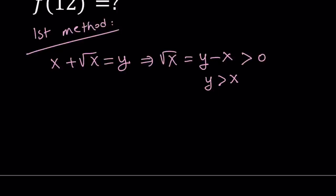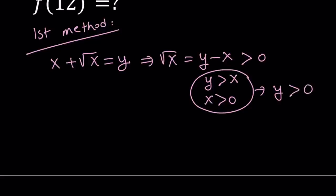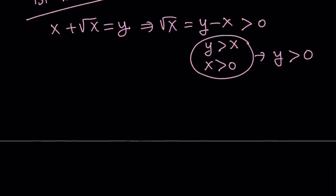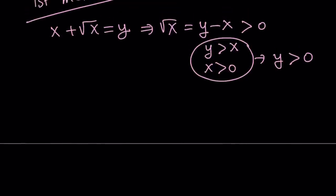Since y is greater than x, and x needs to be positive in order for this to be defined, that also implies this system means y is greater than 0 as well. So we have the following system. Under those conditions, let's go ahead and solve this equation for x.